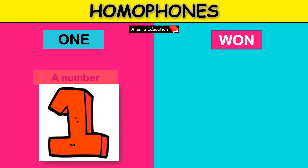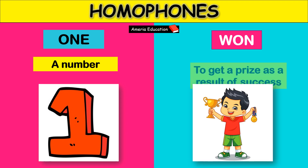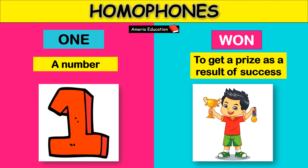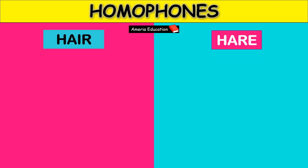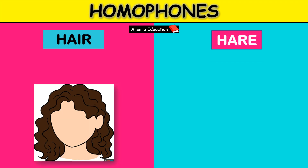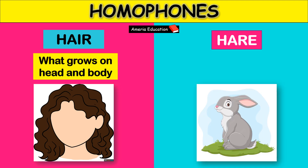O-N-E means a number. W-O-N means to get a prize as a result of success. H-A-I-R means what grows on head and body. H-A-R-E means a rabbit.